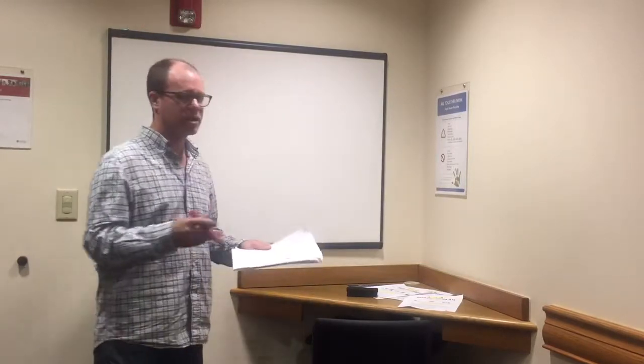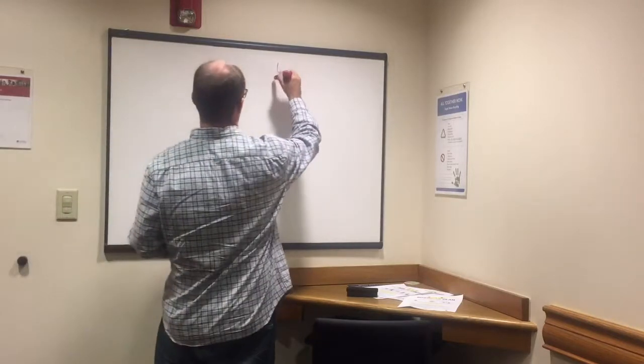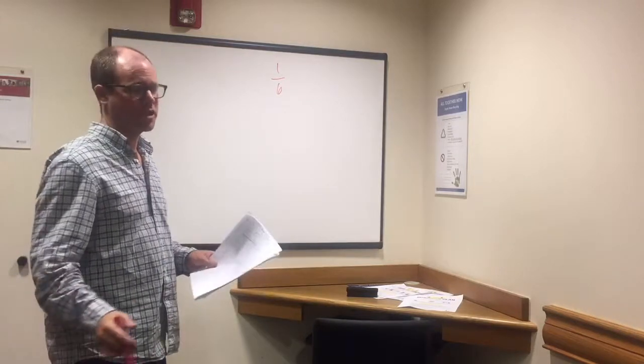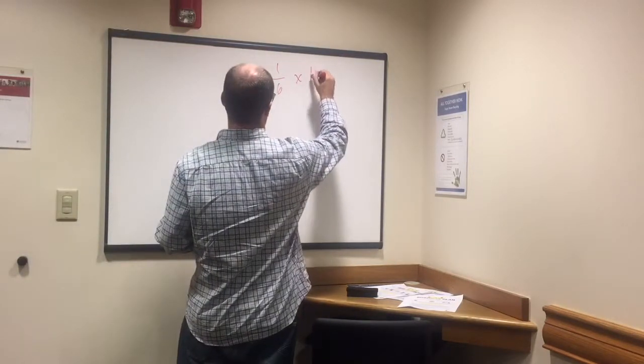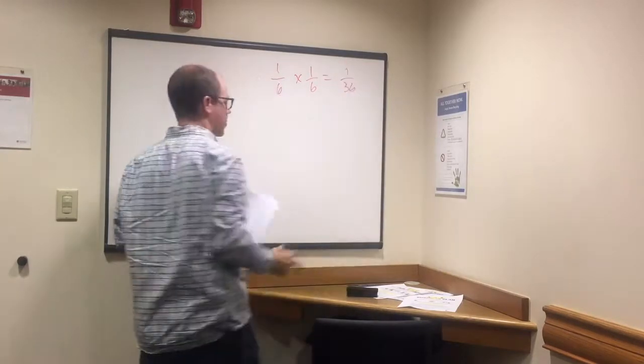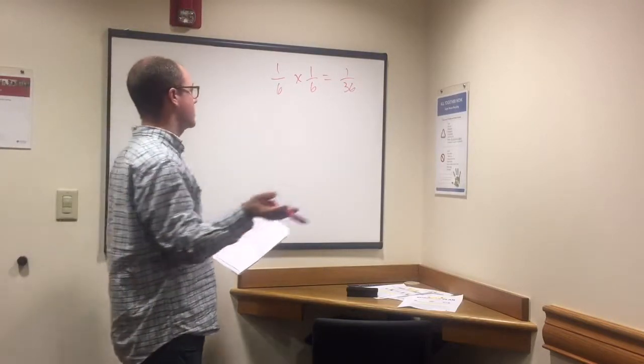So first question is rolling the same number twice. What are the odds of rolling two consecutive ones? We start off, what's the odds of rolling a one? One out of six, there are six possibilities on a die. And what about two consecutive ones? Or it could be two consecutive fours, it's the same probability for all the consecutive numbers on dice.